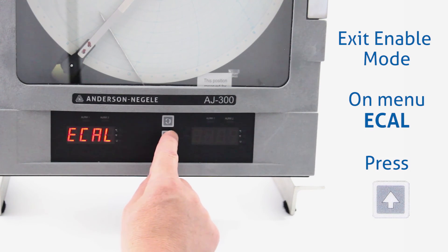To exit the enable mode, when you have enable Cal on the display, you can press the up arrow key and that will take you back to operating mode.